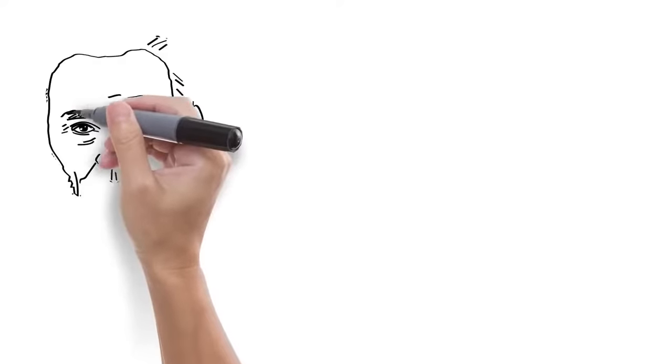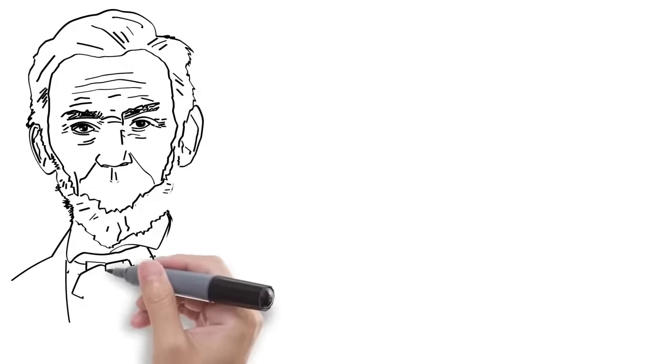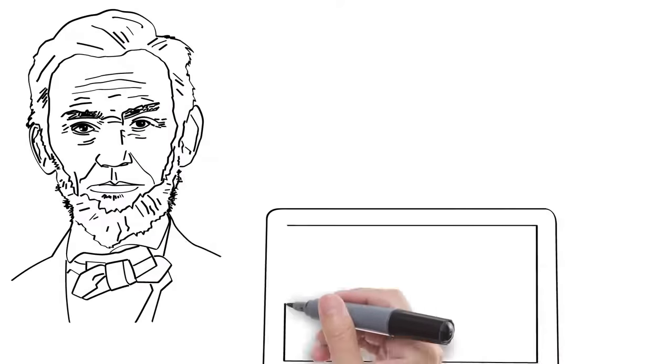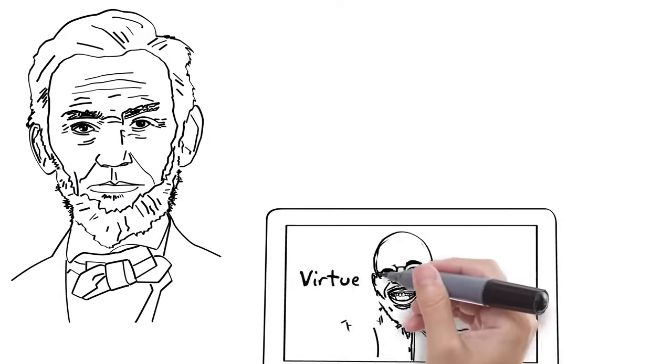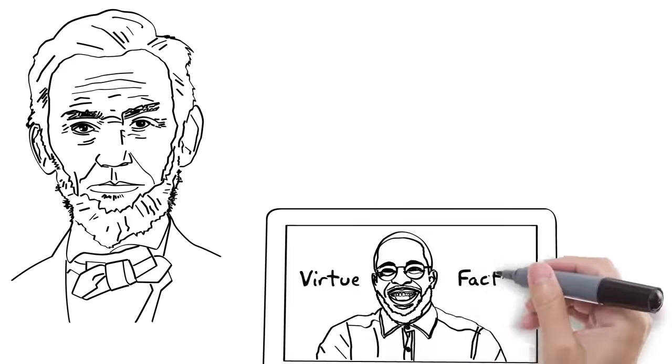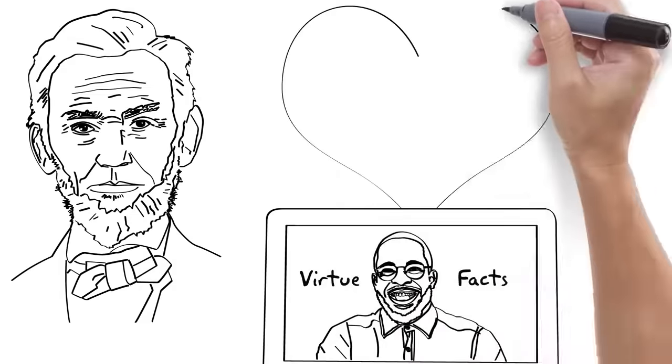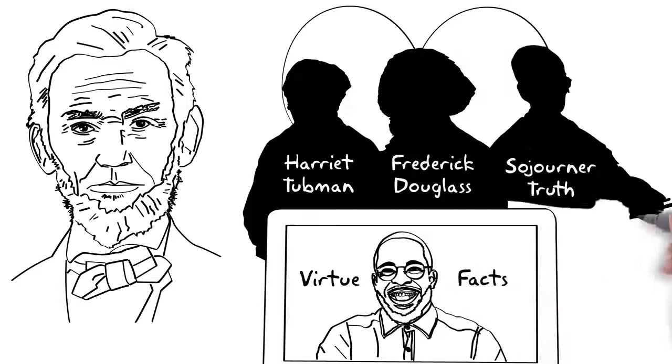In history, Maya participates in a lesson on Lincoln's house-divided speech. Mr. Baldwin annotates the text on screen while asking the students questions about virtue as well as facts. Maya loves the speech and feels inspired by the abolitionist's courage.